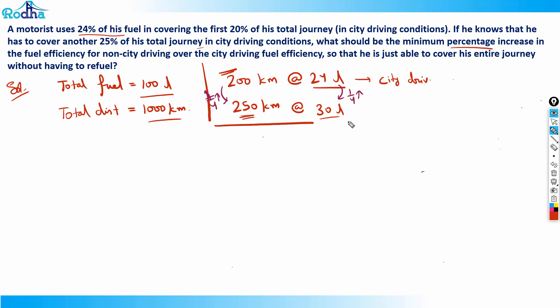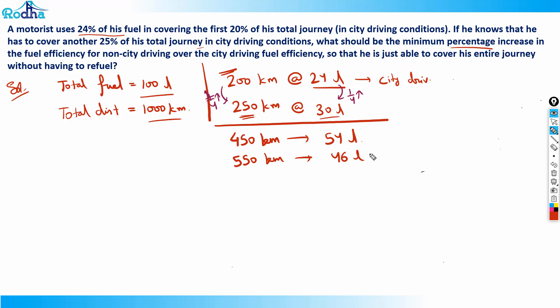So for the total 450 km of city driving, he uses 54 liters of fuel. For the remaining 550 kilometers, he is left with 46 liters of fuel. Now the question asks: what should be the minimum percentage increase in fuel efficiency for non-city driving over city driving?